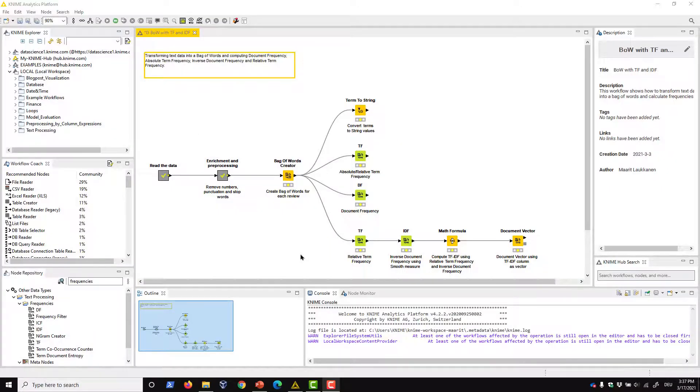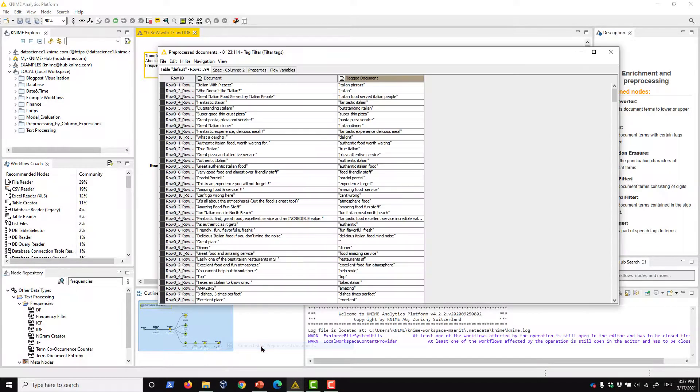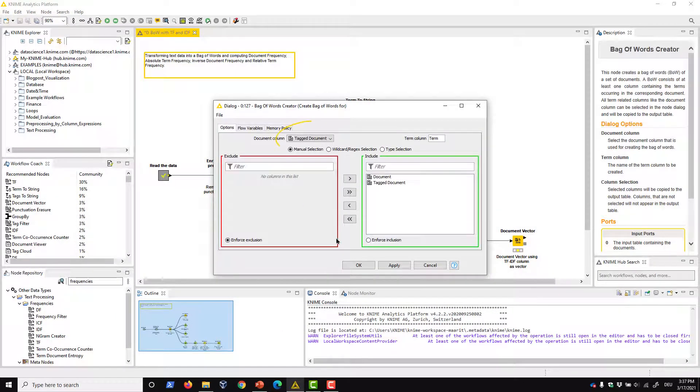In KNIME Analytics platform, we can create a bag of words with the bag of words creator node. Let's try it for a list of restaurant reviews that we've pre-processed already. In the configuration window, we select the document column based on which we want to create the bag of words. The node produces the bag of words in a column of type term, and we can change the output column name here. In this include-exclude framework, we can select which input columns we want to keep in the output table.